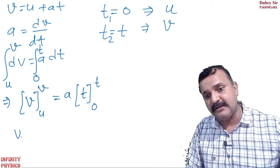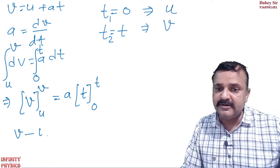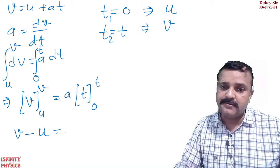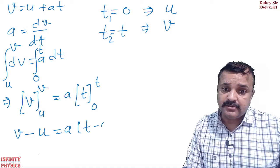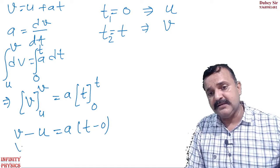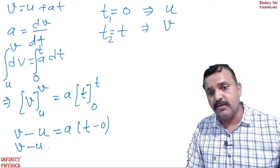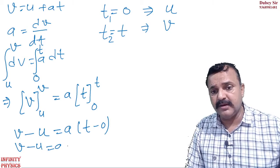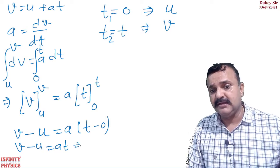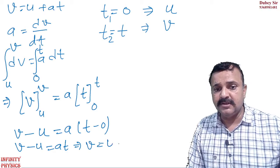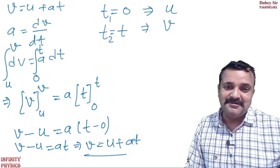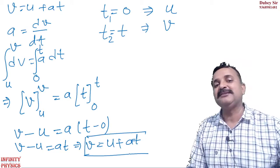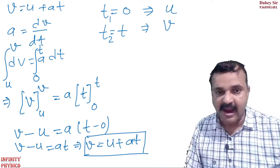V ka integration hua. Dv ka integration hua V. Or V ki limit kia hai? U to V. Output karo. Yaha pe final limit V ki final limit V hi hai. Or initial limit uski U hai. V minus U is equal to A T minus 0. V minus U is equal to A T. Yaha li sakti ho V is equal to U plus A T. This is your first equation which we have to derive with the help of calculus.